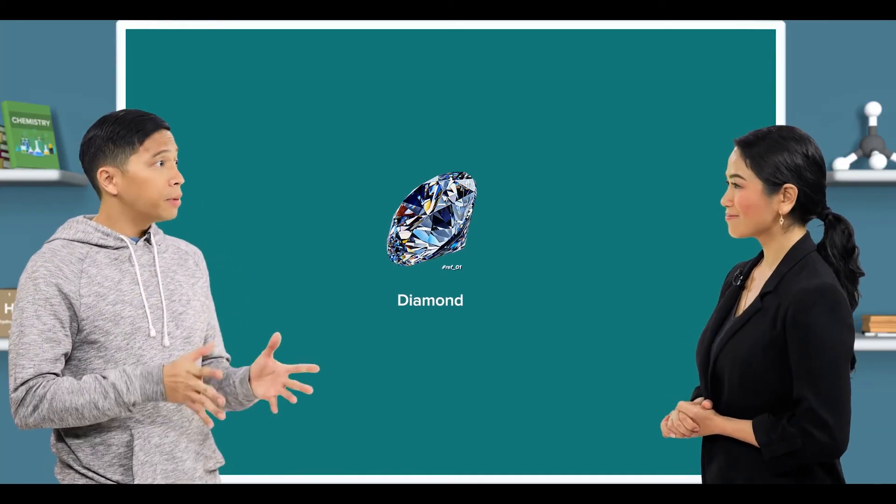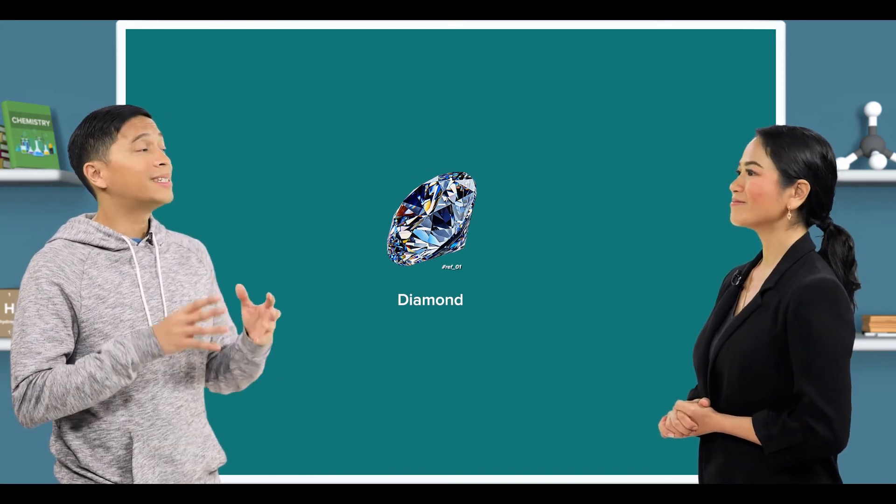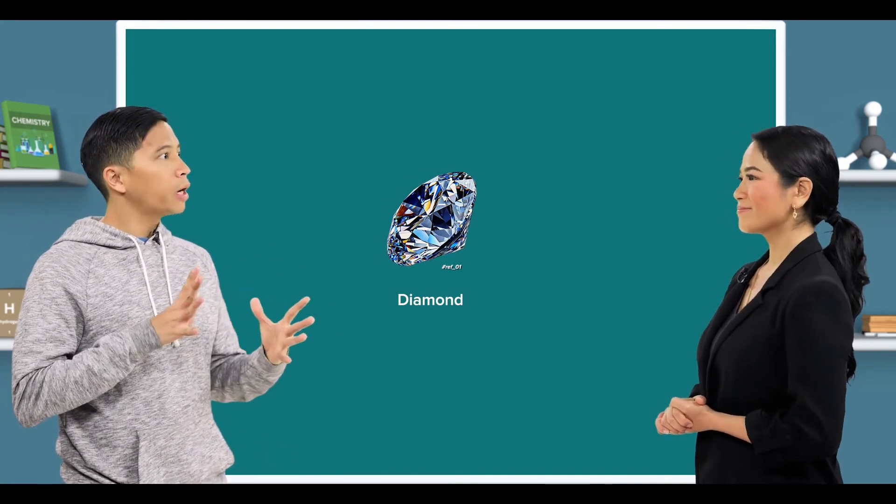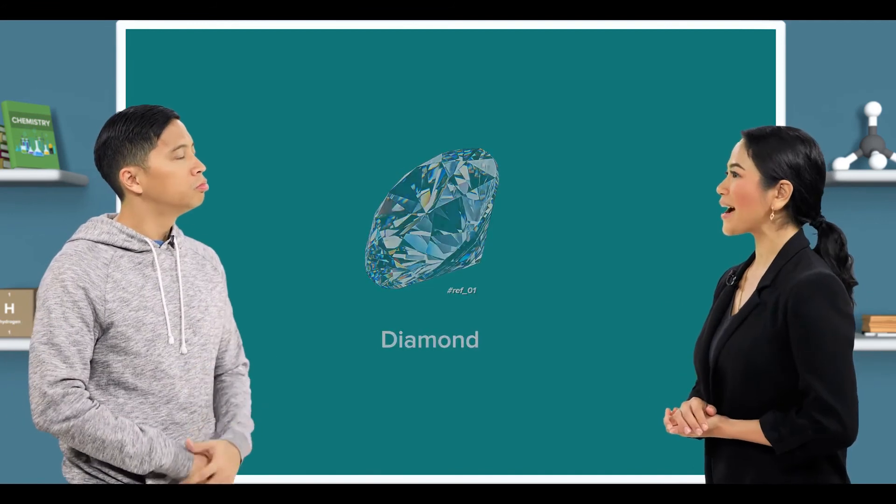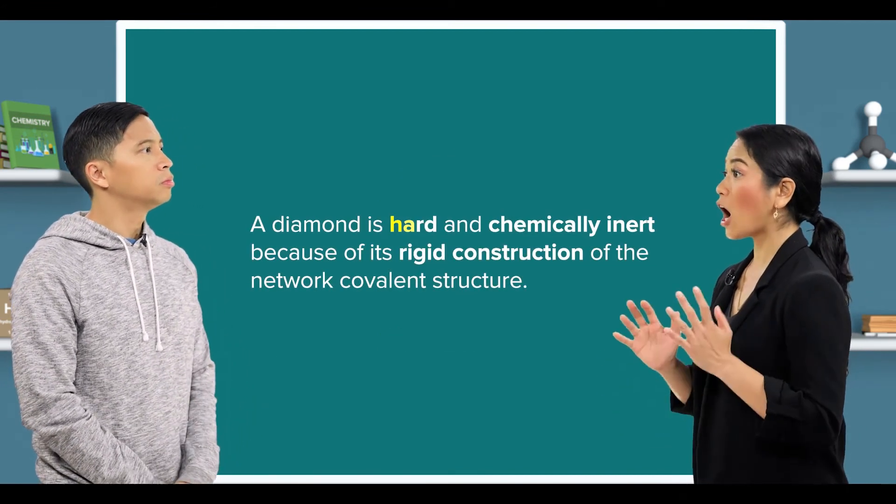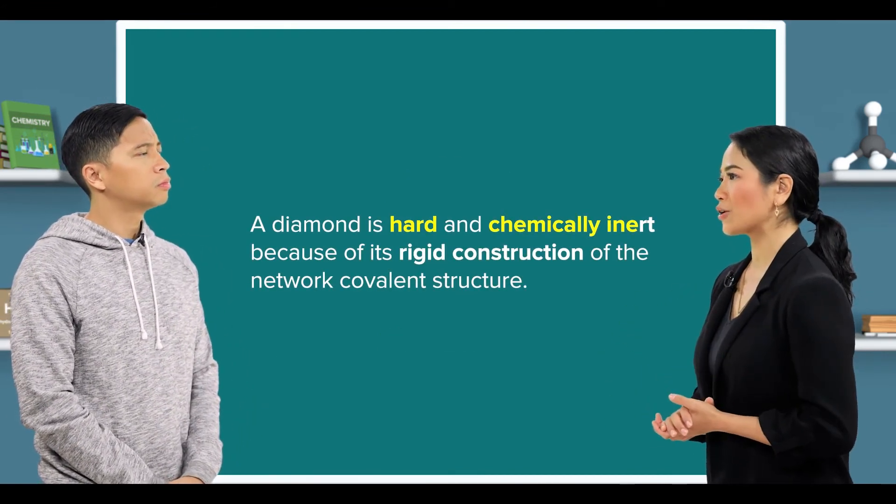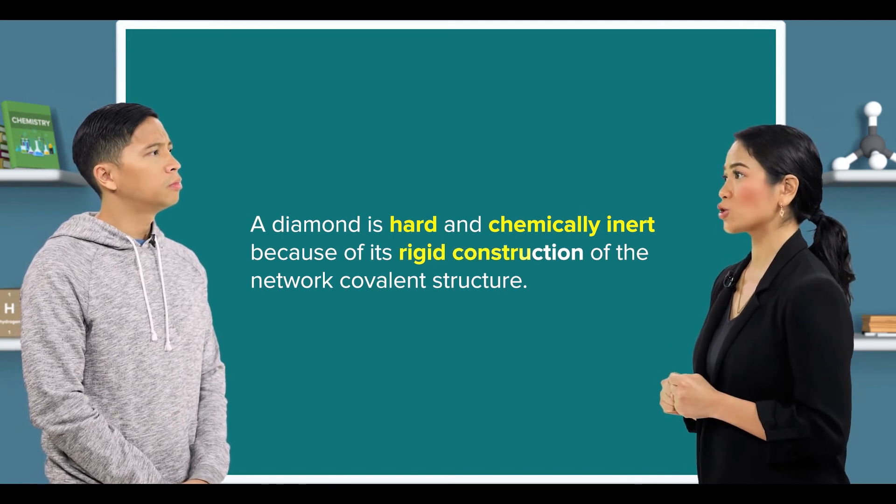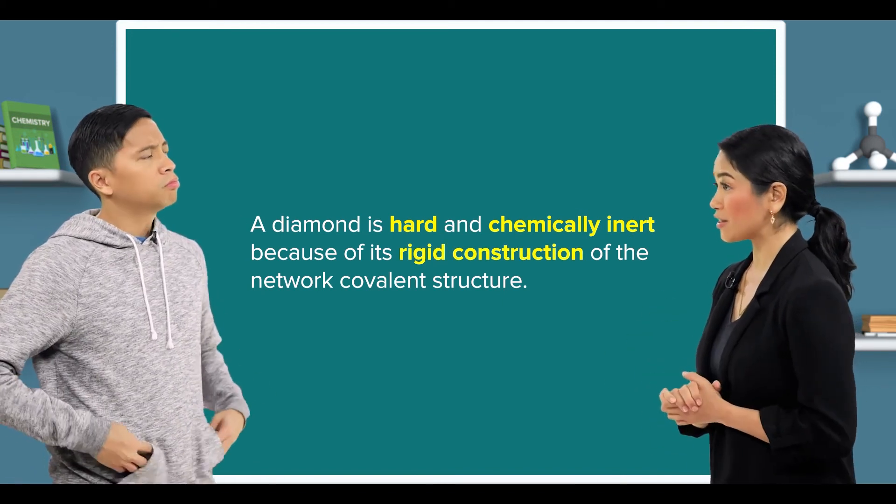Oh, okay. So, a diamond is simply put a giant molecule. Macro means big. That's right. And a diamond is hard and chemically inert because of its rigid construction of the network covalent structure.